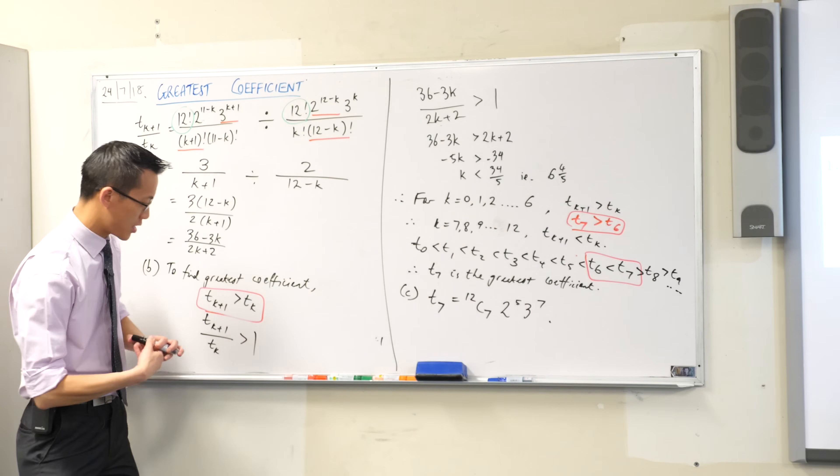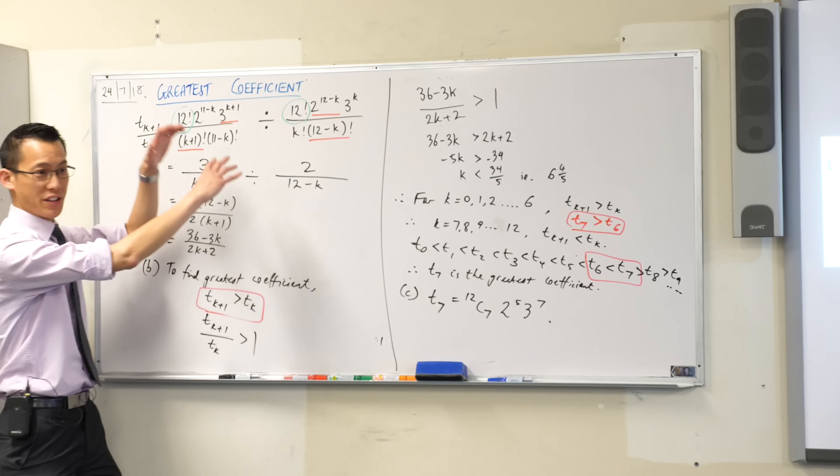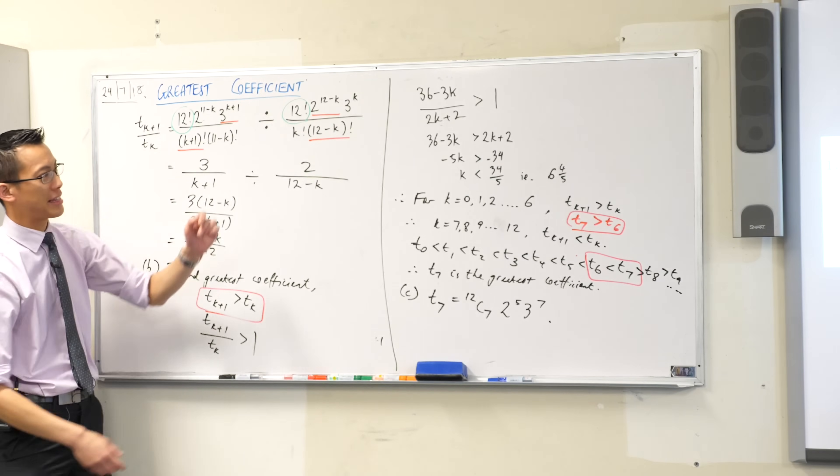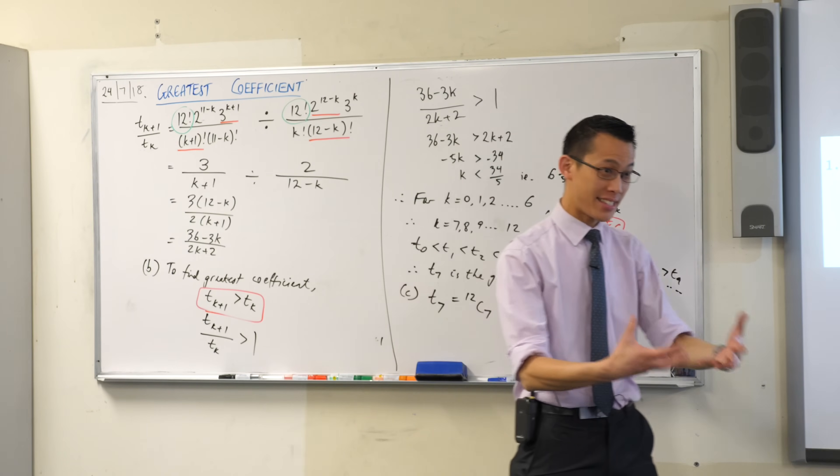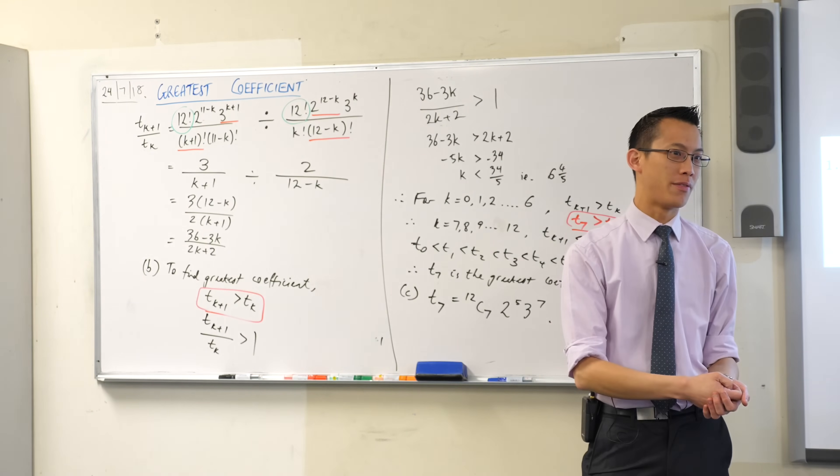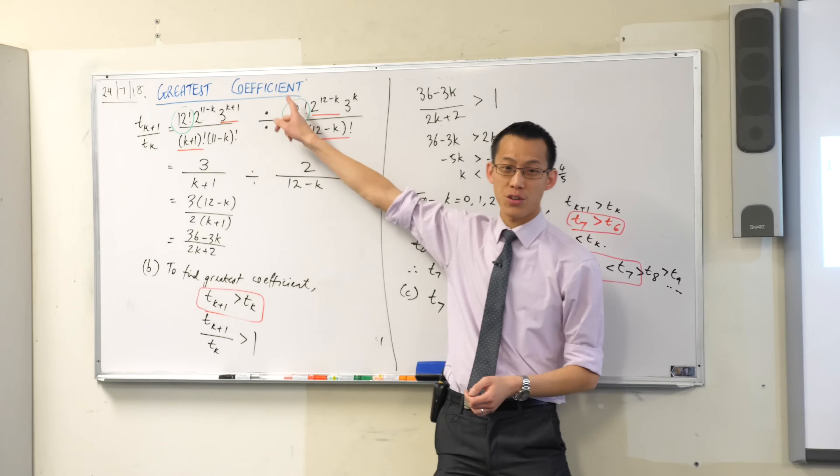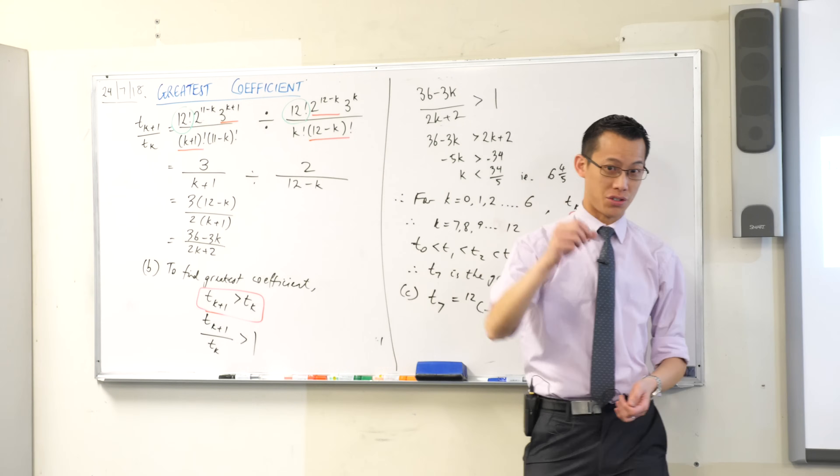Done, okay. Now this is the greatest coefficient, so we haven't worried about the x's that appeared in the original question. But later on, we're going to have a look at what happens when x itself also takes on numerical values. And that's when we look at not the greatest coefficient, but the greatest term. Okay.